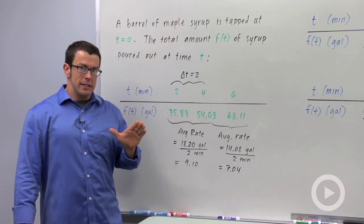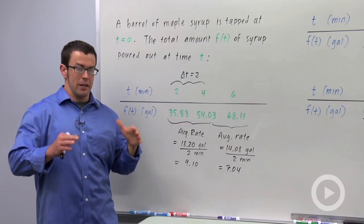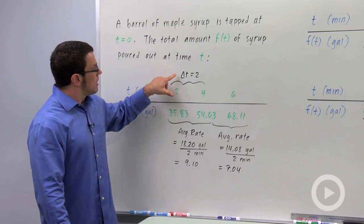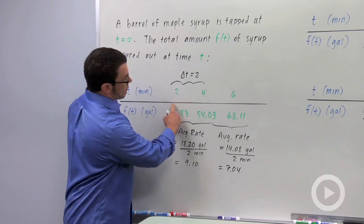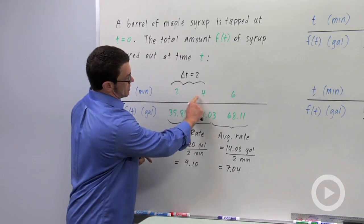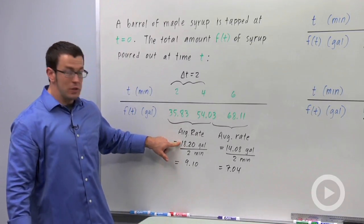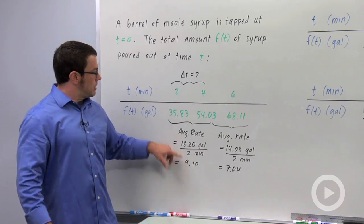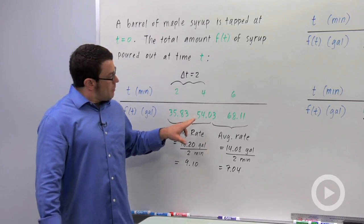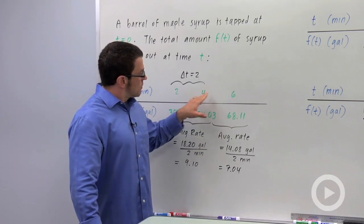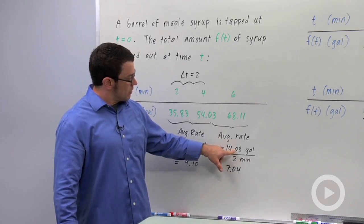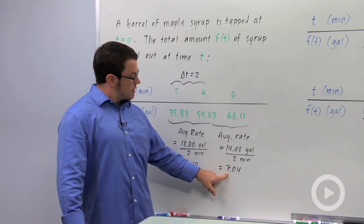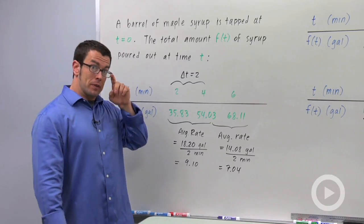The idea behind instantaneous rate of change is the same as the idea behind instantaneous velocity. I want to take average rates of change over shorter and shorter increments of time. Here the increment of time is 2 seconds. So if I take an average rate of change over this increment from t equals 2 to t equals 4, I get 18.2 gallons over 2 minutes, and it gives me 9.1 gallons per minute. But if I do the same thing over the time interval from t equals 4 to t equals 6, I get a different answer: 14.08, the change in the amount of syrup over 2 minutes, giving 7.04 gallons per minute.